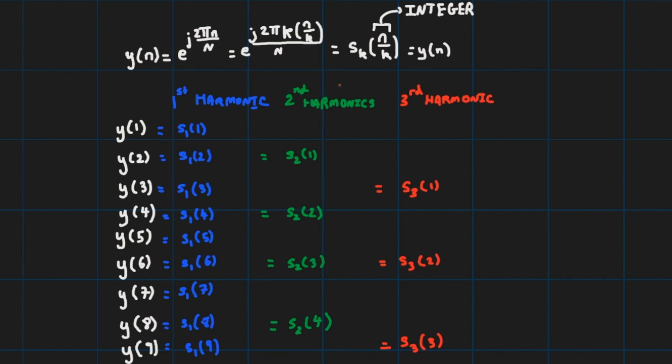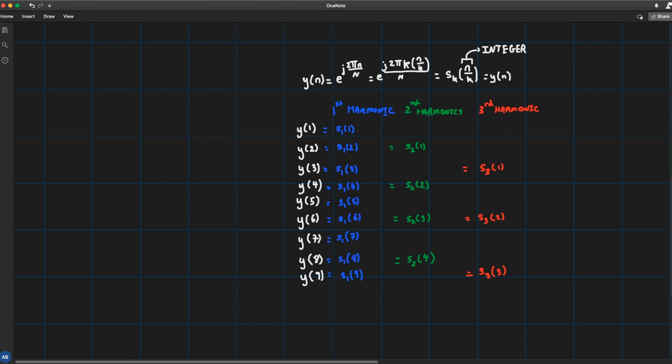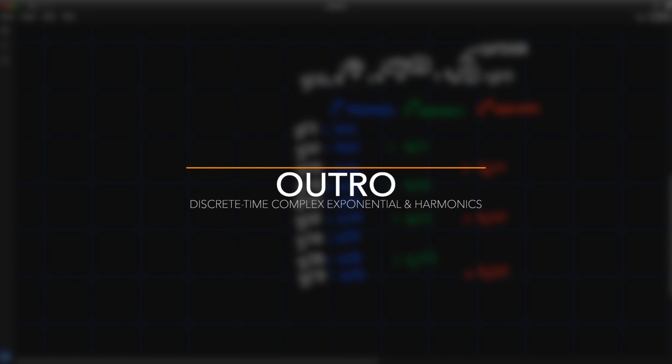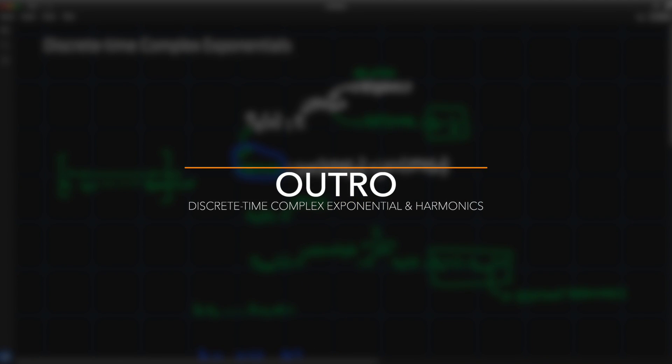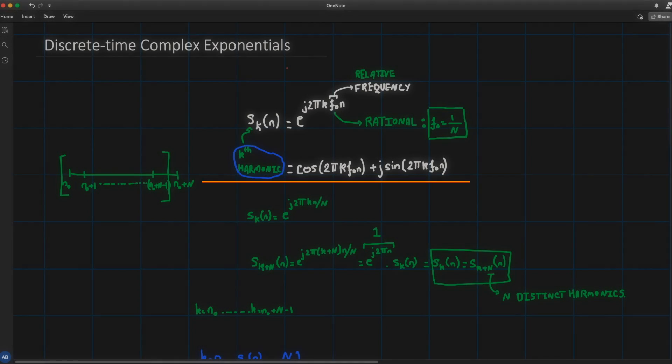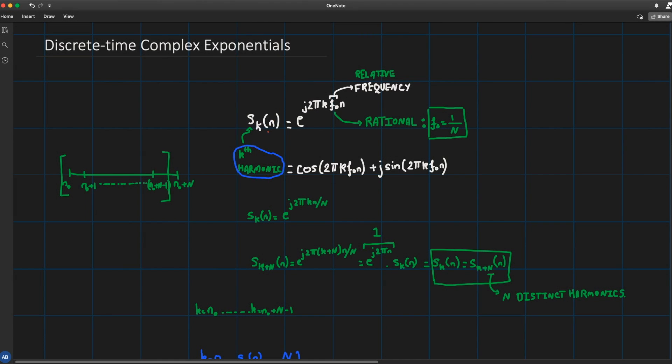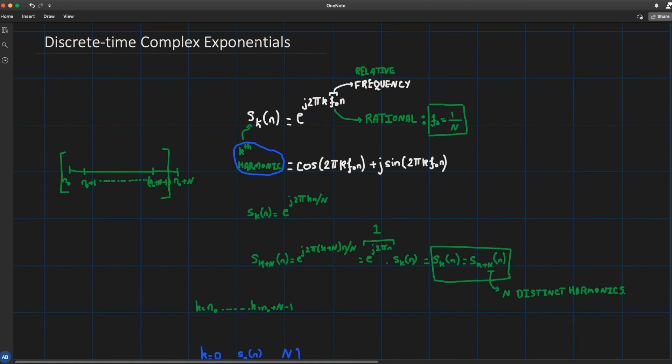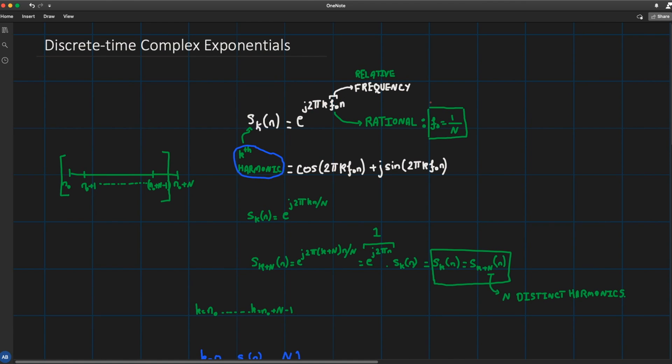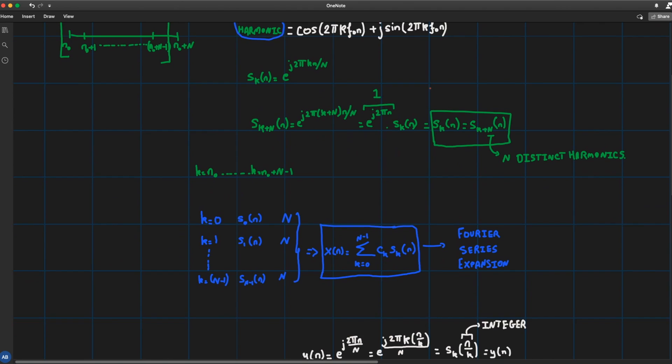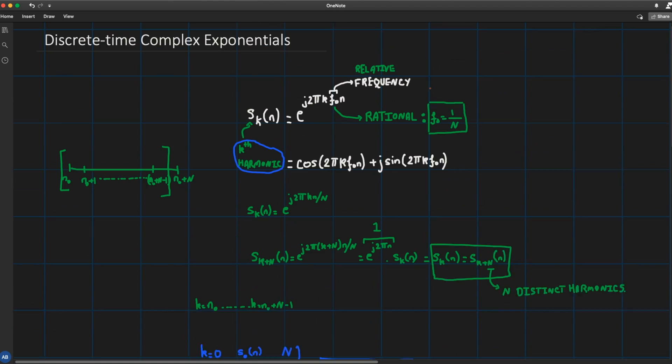So a table of complex exponentials suffices to generate different harmonics. So that's about it, that's all I have to say for this lecture on discrete time complex exponentials. So we defined what a discrete time complex exponential is, characterized it through its frequency and absolute frequencies.